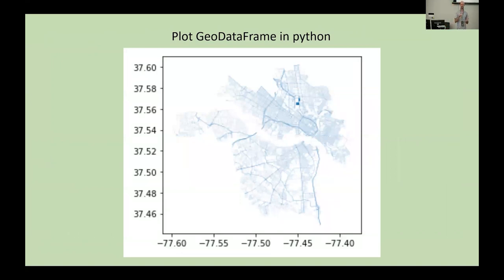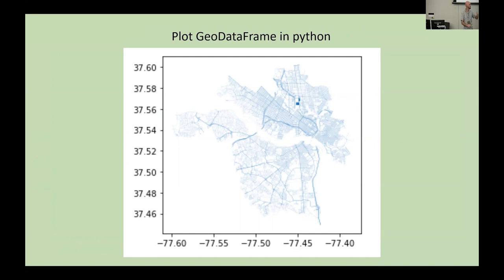What you do in a pandas or GeoPandas GeoDataFrame is take some spatial component of the data and add a column to your data frame which holds the spatial information in a text format, and then you can plot it. This is a road map of the city of Richmond. You can see the James River going through the middle of the city, but there's no background context or anything like that — it's pretty bare bones. So you are plotting in Python, but it leaves a little bit to be desired.